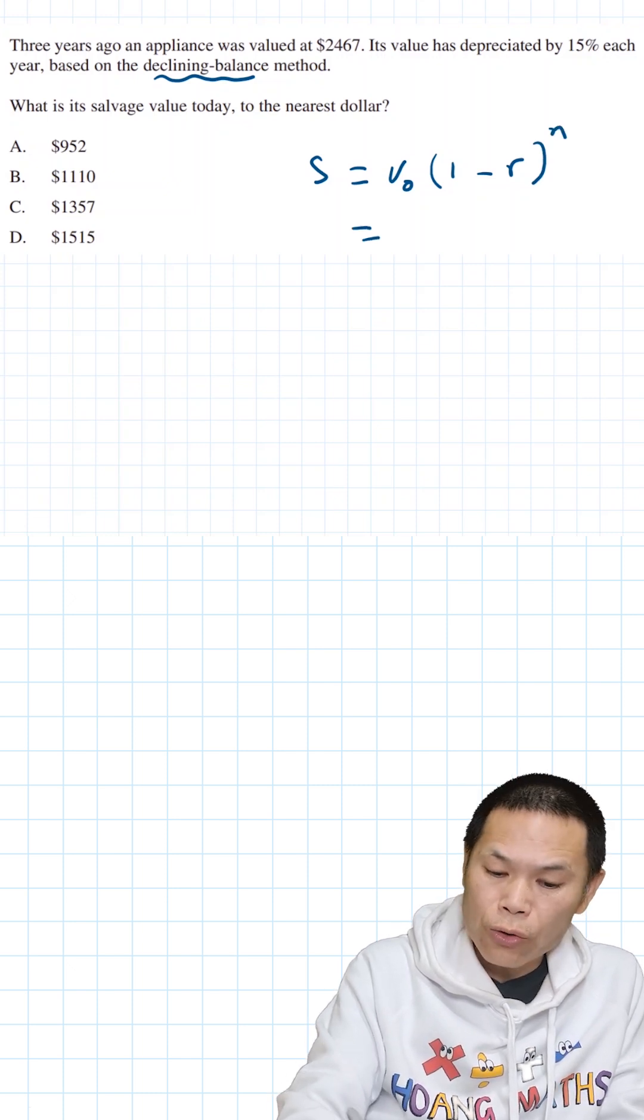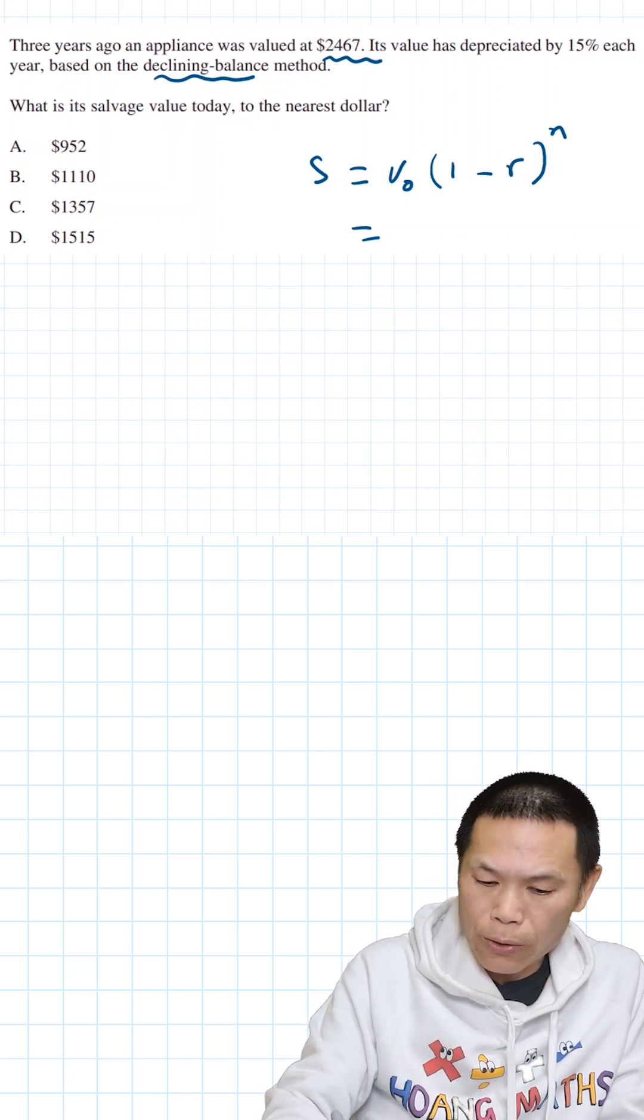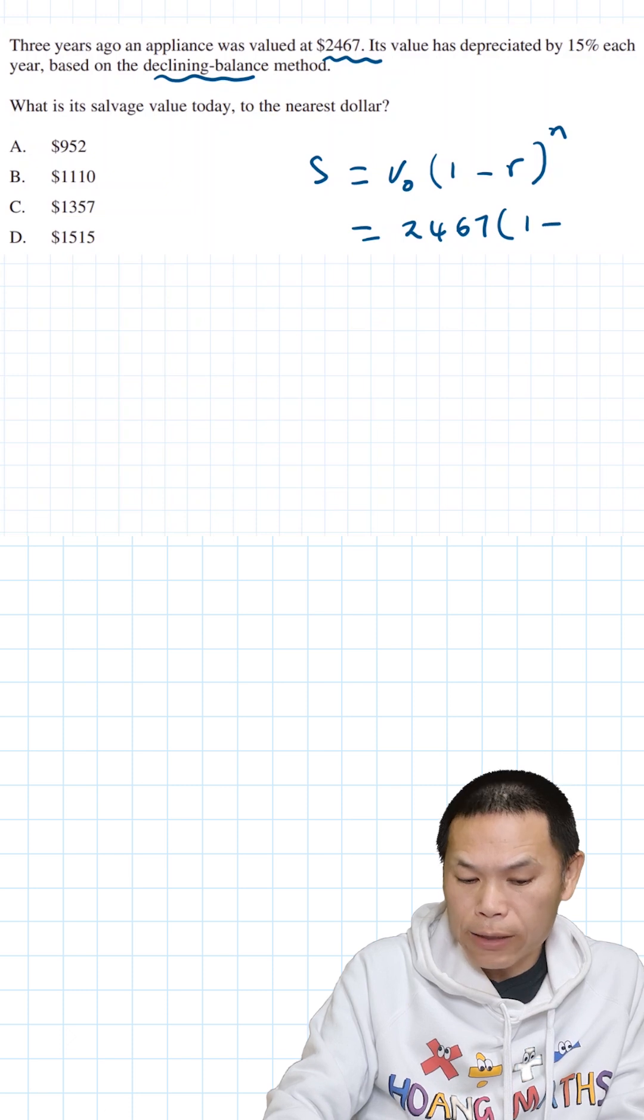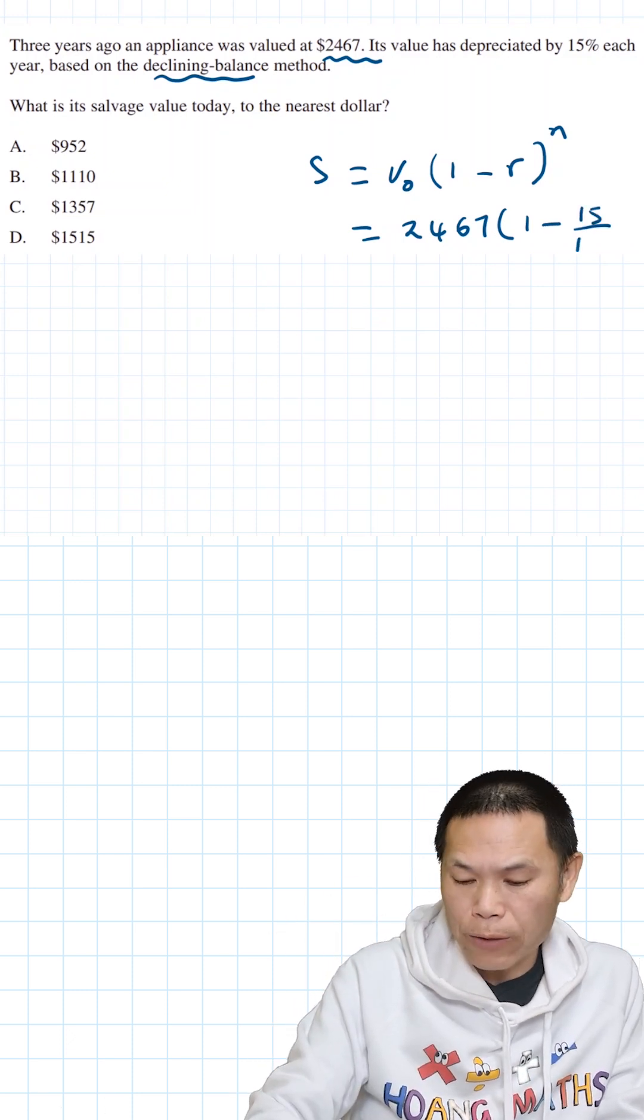So we know that the original V₀ is this because that was three years ago. Okay, so 2,467 times one minus 15%. So 15% means 15 over 100, and power n.